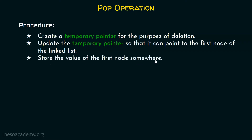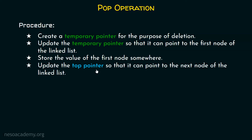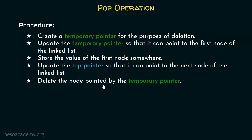We will use this pointer to delete the first node of the linked list, or the topmost element of the stack. Then we will store the value of the first node somewhere before deletion. This is important because the pop function will not only delete the node but will also return the topmost element to the caller. After this, we must update the top pointer so that it can point to the next node of the linked list. Then we are free to delete the first node, and finally return the value of the first node.